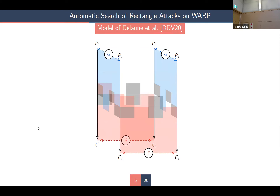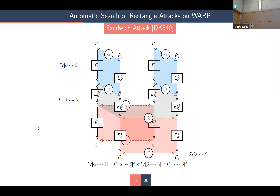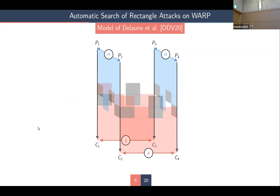A problem with this representation is that the attacker needs to manually cut the cipher into three parts. Delon and co-authors introduced a new kind of model that allows computing the overall probability without manually selecting which rounds belong to the upper, middle, and lower parts.